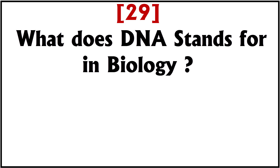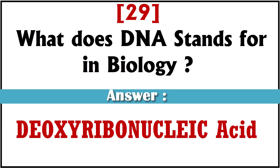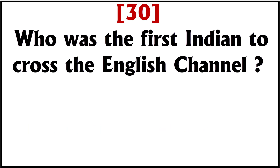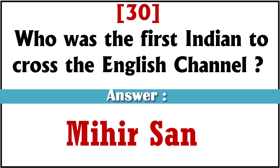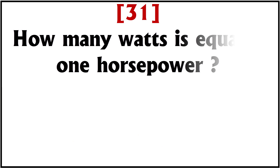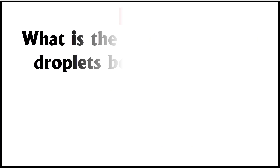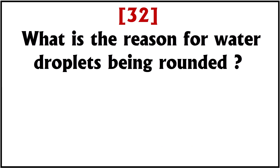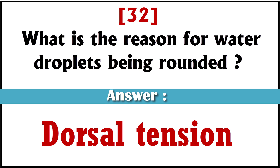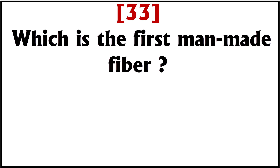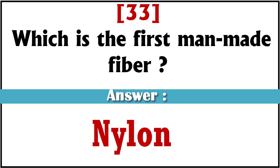What does DNA stand for in biology? Deoxyribonucleic acid. Who was the first Indian to cross the English Channel? Mihir Sen. How many watts is equal to one horsepower? 746 watts. What is the reason for water droplets being round? Surface tension. Which is the first man-made fiber? Nylon.